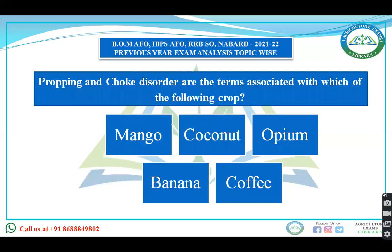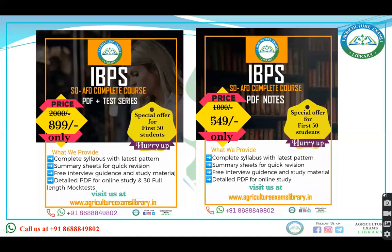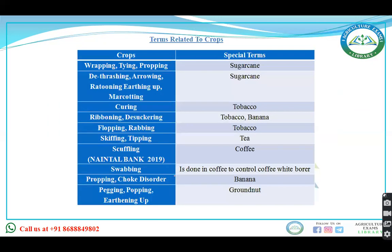Next question: propping and choke disorders are terms associated with which of the following crops? Options include mango, coconut, opium, banana, and coffee. Propping means the act of giving support. Propping and choke disorders are associated with the banana crop.